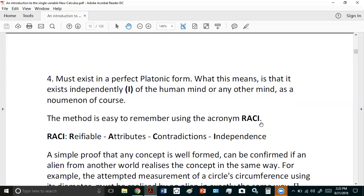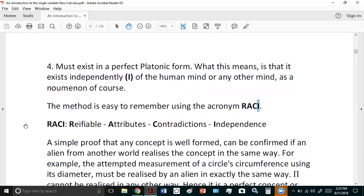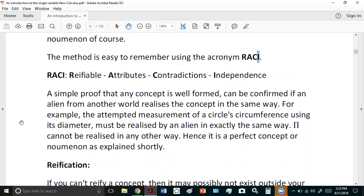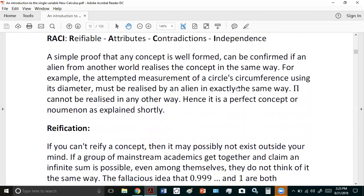So this method is easy to remember. A concept must be reifiable. It must be defined in attributes that it possesses, must not lead to any logical contradictions, and it must exist independently of all thought. In other words, something like pi, for example, doesn't require you to think about it to be well formed. It is well formed, whether you think about it or not. And one easy way to remember is if it can be realized by an alien, it would be realized in exactly the same way. So it's a perfect concept.